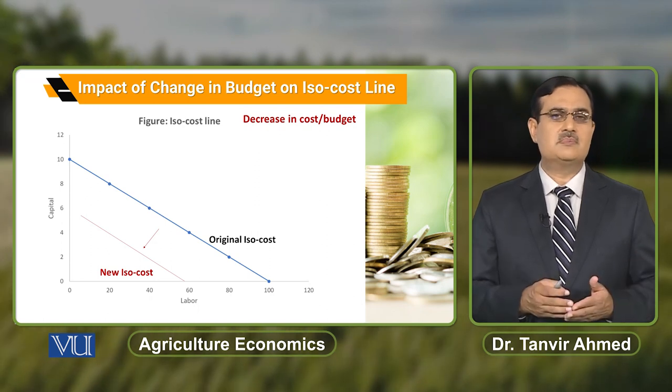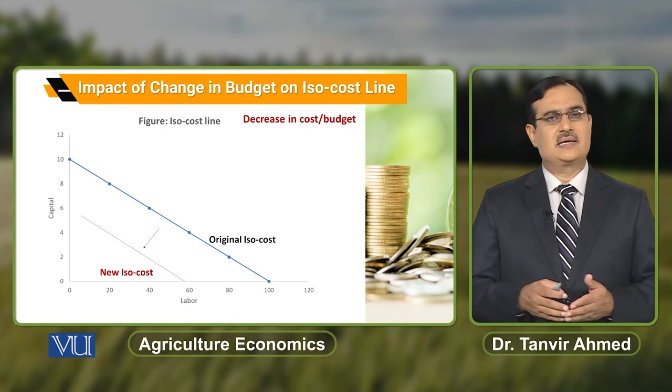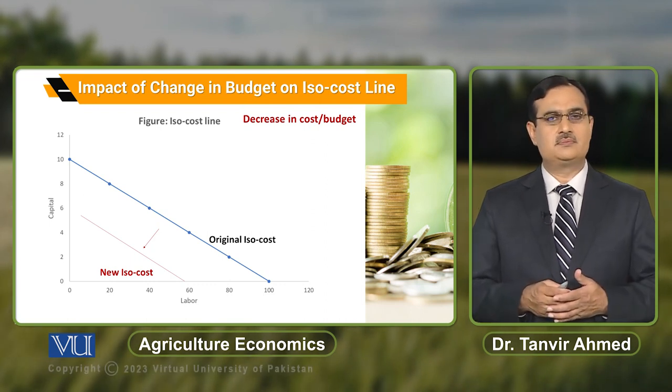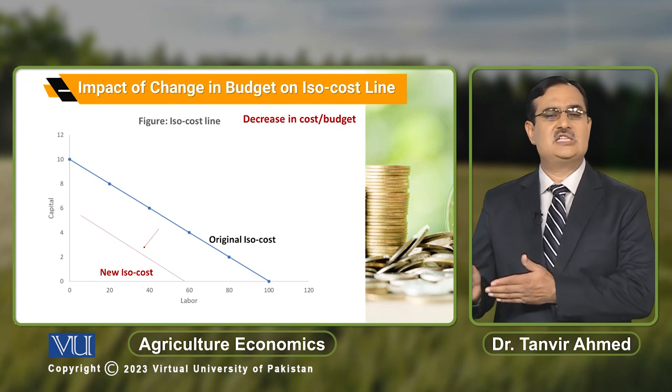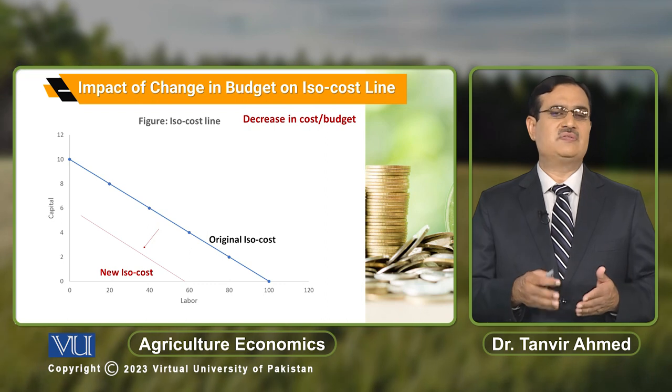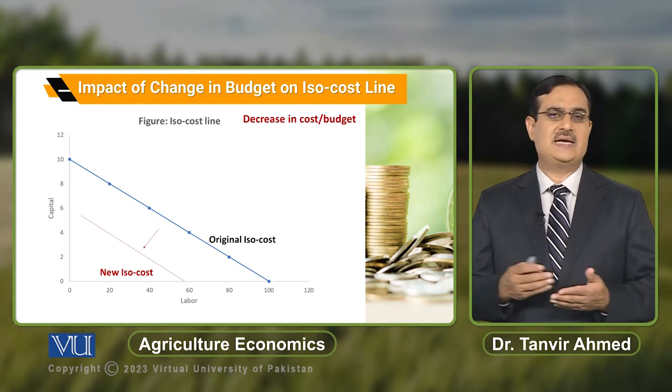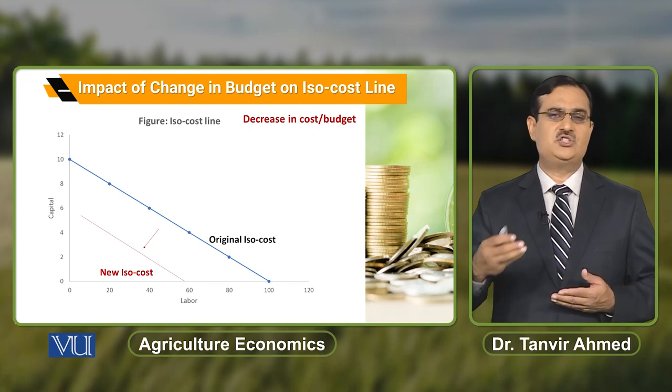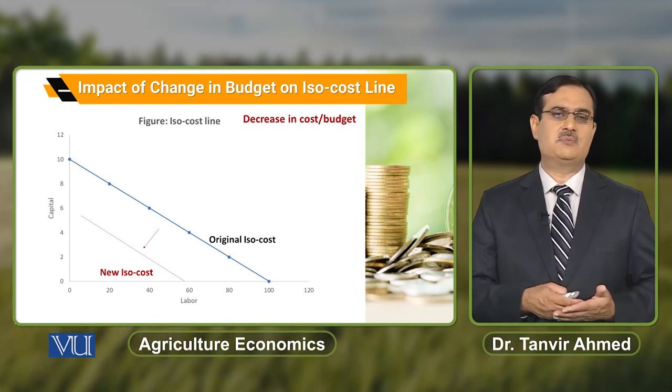To summarize: when there is no change in prices of inputs but only there is change in allocation of resources by the producer، because of that change in allocation of resources to purchase two inputs، it will shift the ISO cost line from one position to another position۔ ISO cost line will shift upward if there is increase in allocation of resources by the producer to purchase two inputs، اور downward shift ہوگی if there is decrease in allocation of budget to purchase two inputs۔